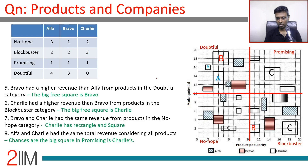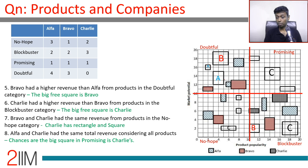Now for revenue. Bravo had higher revenue than Alpha from products in the Doubtful category. In the Doubtful quadrant, Alpha has four products but Bravo has more revenue, so Bravo must have the big missing square. The other two remaining squares should be Alpha. So the large box in Doubtful is Bravo, and the two smaller ones are Alpha.